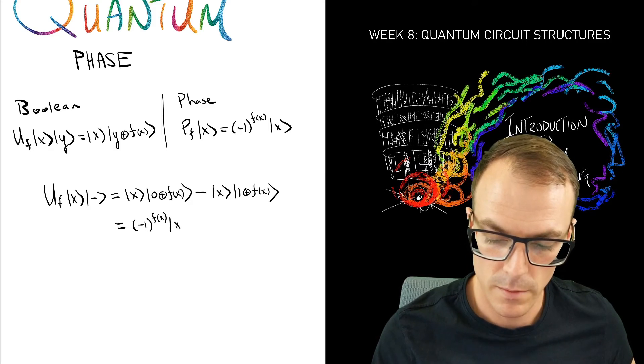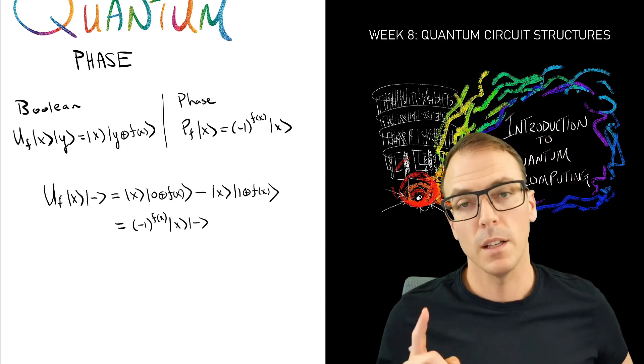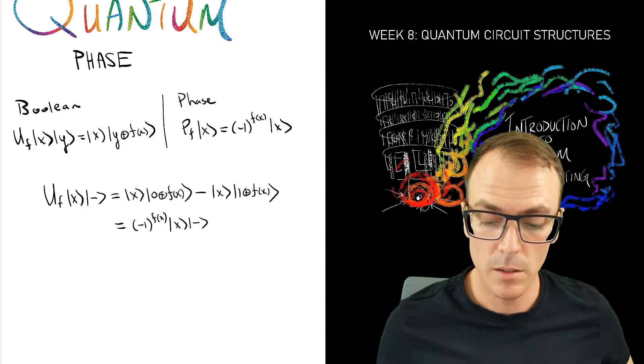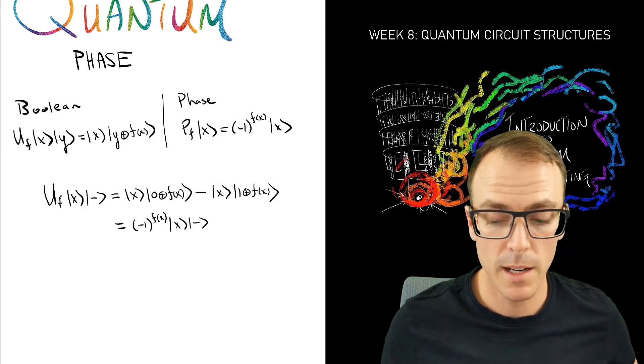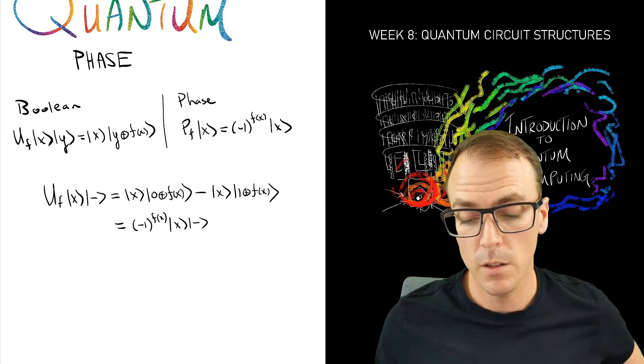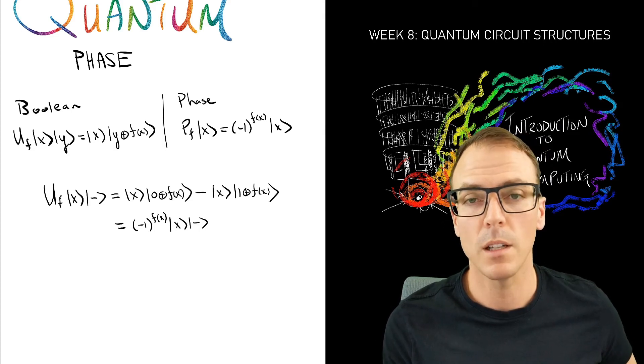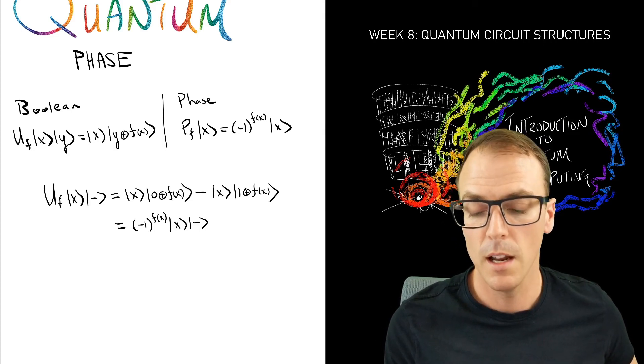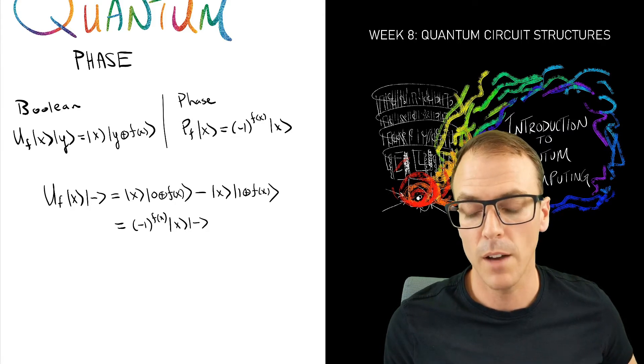So it all depends on what f(x) is. Again, if f(x) is zero I just get |x⟩ in the minus state. If f(x) is one, you can see that by the symmetry in these two superpositions I've flipped the value of the bit in that second register.